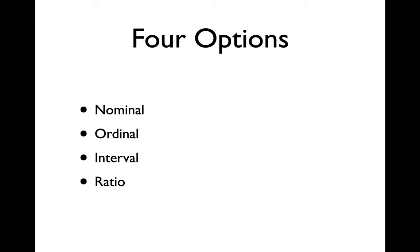There are four options for measurement: nominal, ordinal, interval, and ratio. Nominal is the lowest level, then ordinal, then interval, then ratio. All the rules for nominal hold for the other three. As we move from nominal to ordinal, we add new rules. As we move from ordinal to interval, we have all the rules from nominal and ordinal and add new ones. And as we move from interval to ratio, we have all the rules from nominal, ordinal, and interval, and add more rules on top to get to ratio level data.